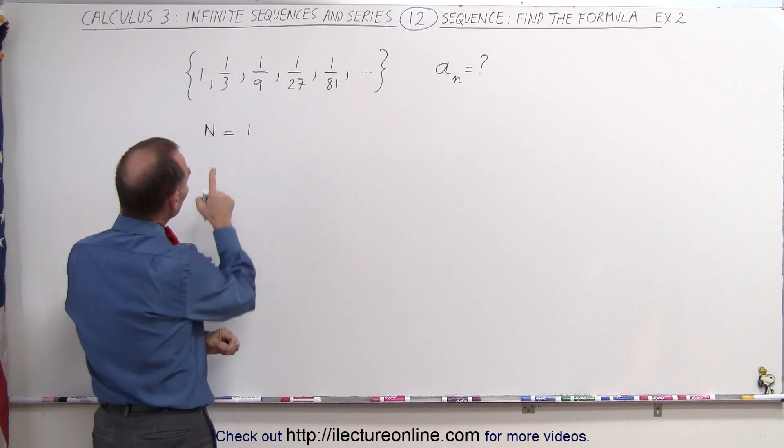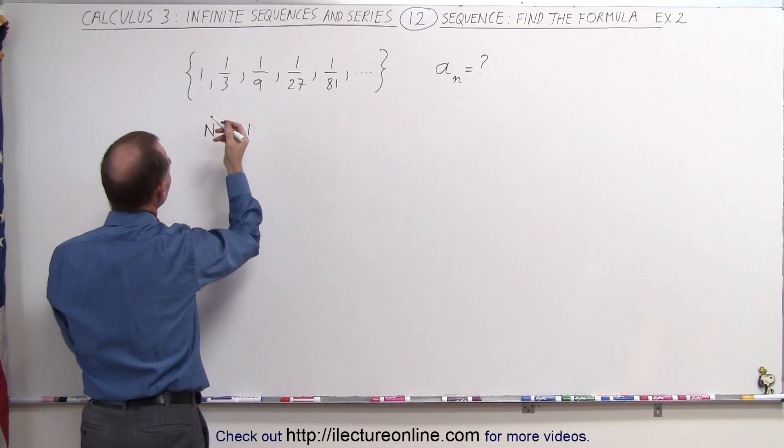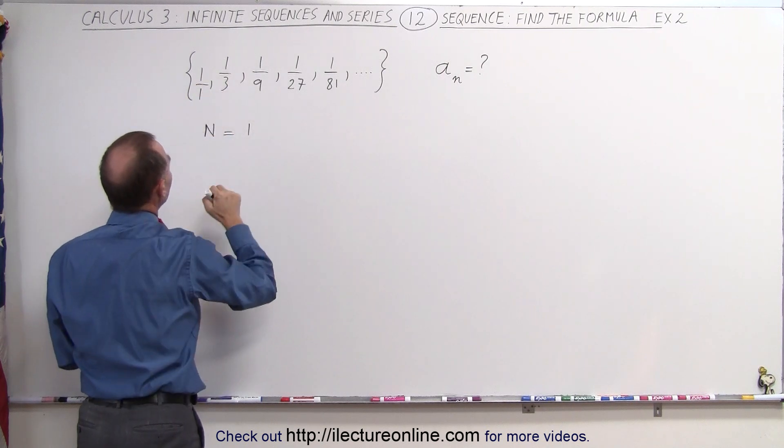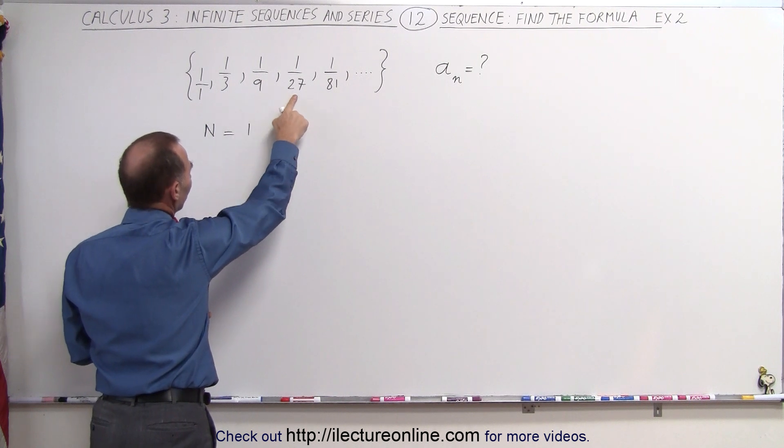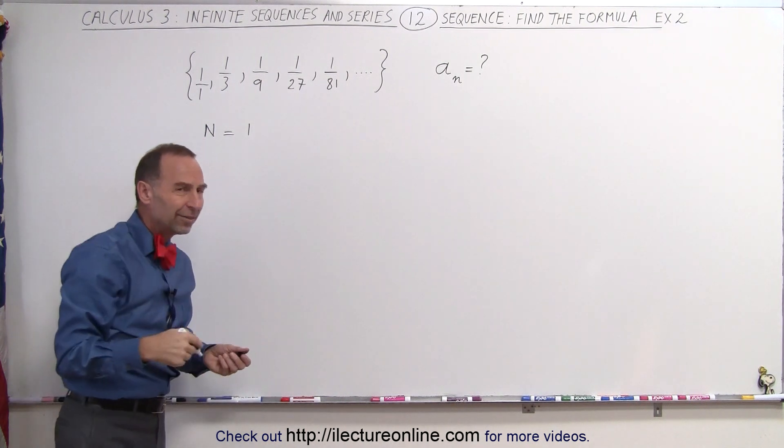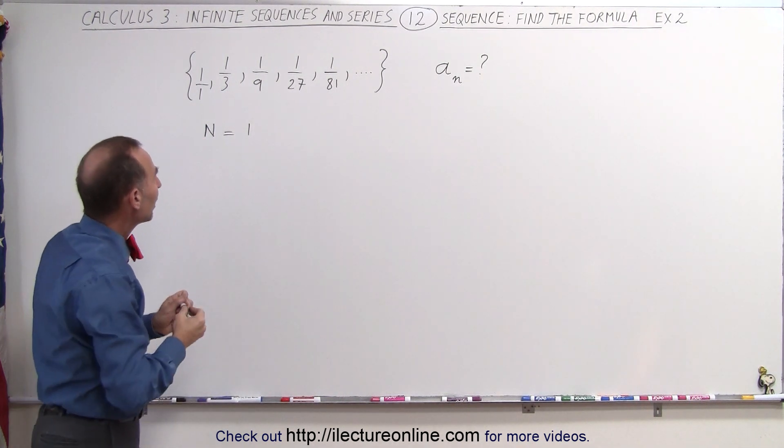But the denominators, notice that the first denominator we can write this as 1 over 1. The second denominator is 3. The third denominator is 9. The fourth denominator is 27. So we can see a pattern of 3 raised to an exponent.